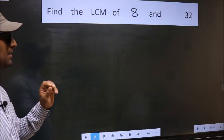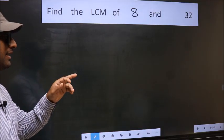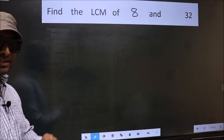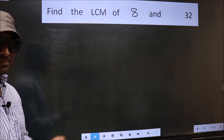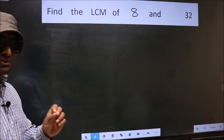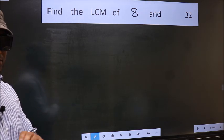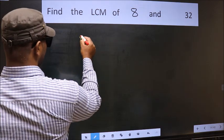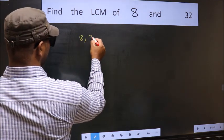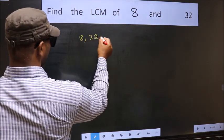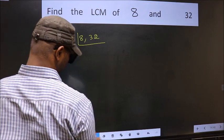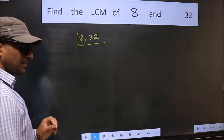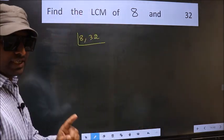Find the LCM of 8 and 32. To find the LCM, first we should frame it in this way — that is 8 and 32. This is your step 1.